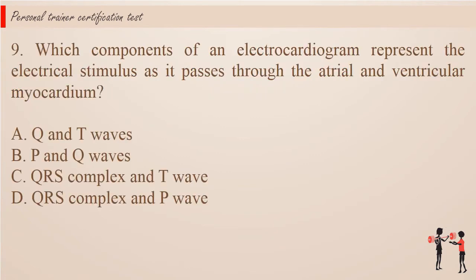Question 9. Which components of an electrocardiogram represent the electrical stimulus as it passes through the atrial and ventricular myocardium? a. Q and T waves. b. P and Q waves. c. QRS complex and T wave. d. QRS complex and P wave.